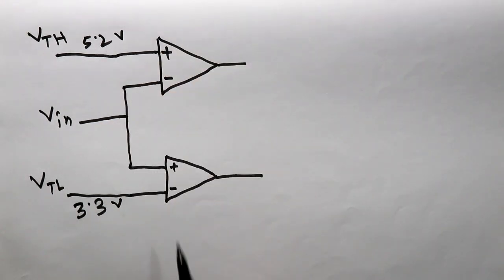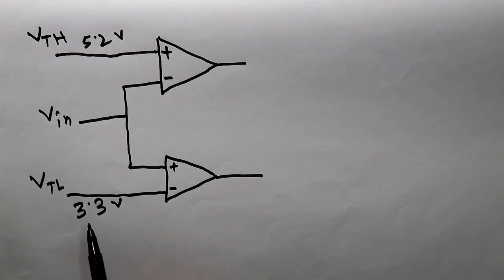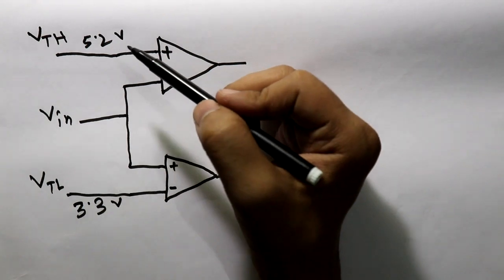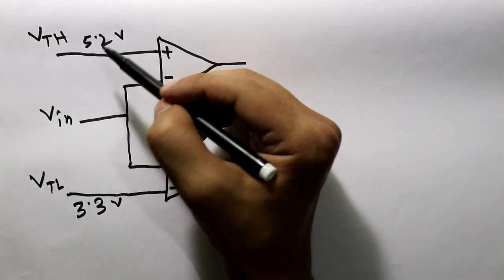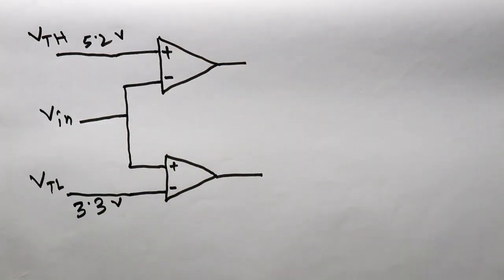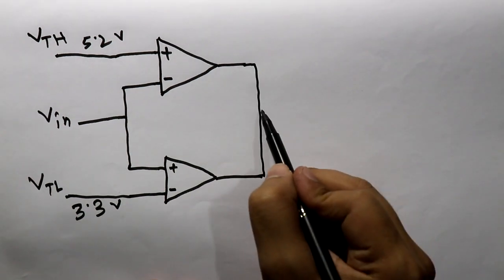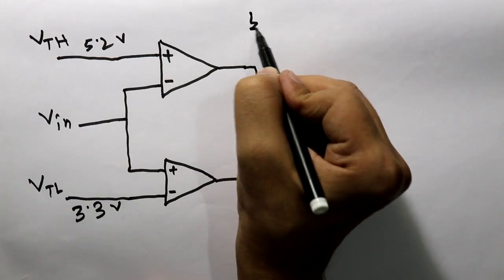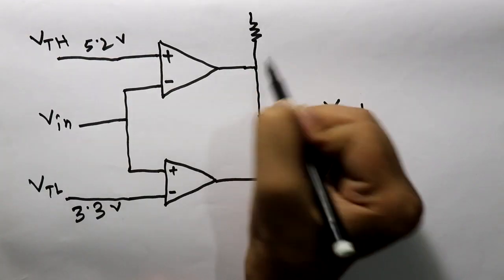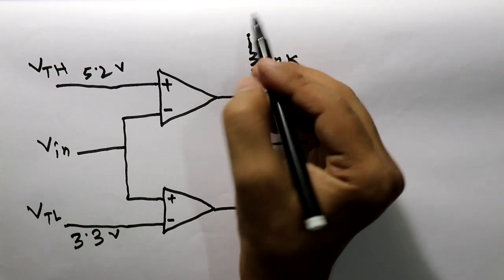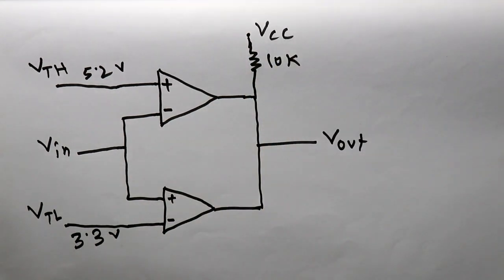My output will be high whenever the input is higher than 3.3 volts and lower than 5.2 volts. If the input voltage is lower than 3.3 volts the output will be low, and if the input voltage is higher than 5.2 volts the output will also be low. Now connect both outputs together and take the output from there — I have to pull up this point with a 10 kilohm resistor to VCC. This implements an AND function.